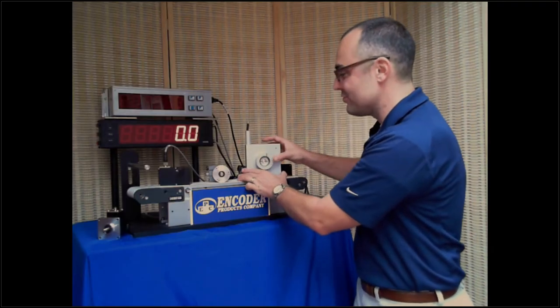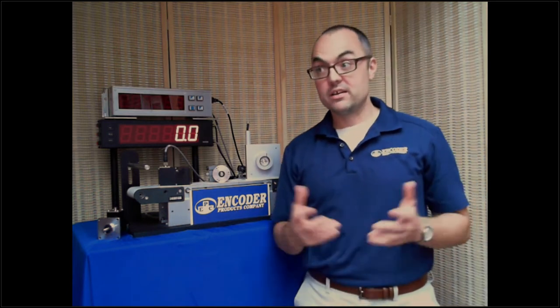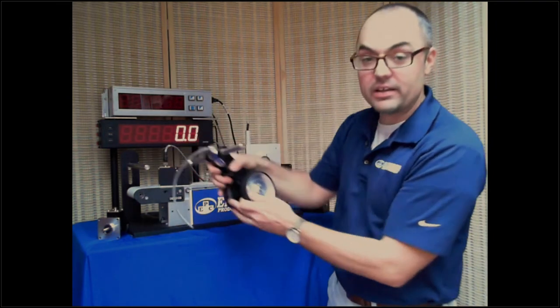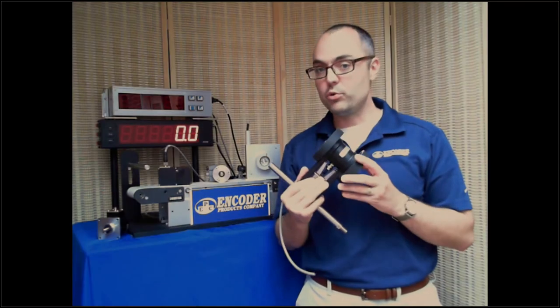So why would you use a draw wire encoder? There's a lot of ways out there to accomplish linear measurement. Our wheel encoders are used for linear measurement as well. We have this on our conveyor belt here, and you can use it for running on belts or running against surfaces and get linear measurement.